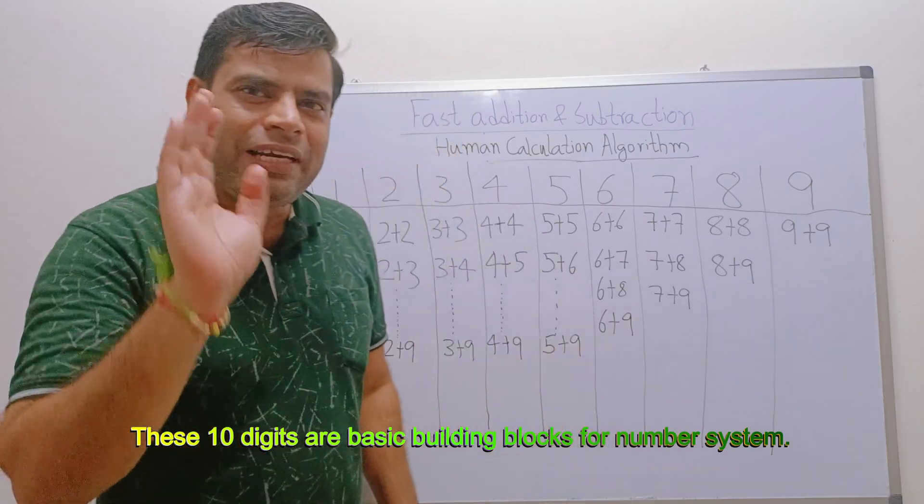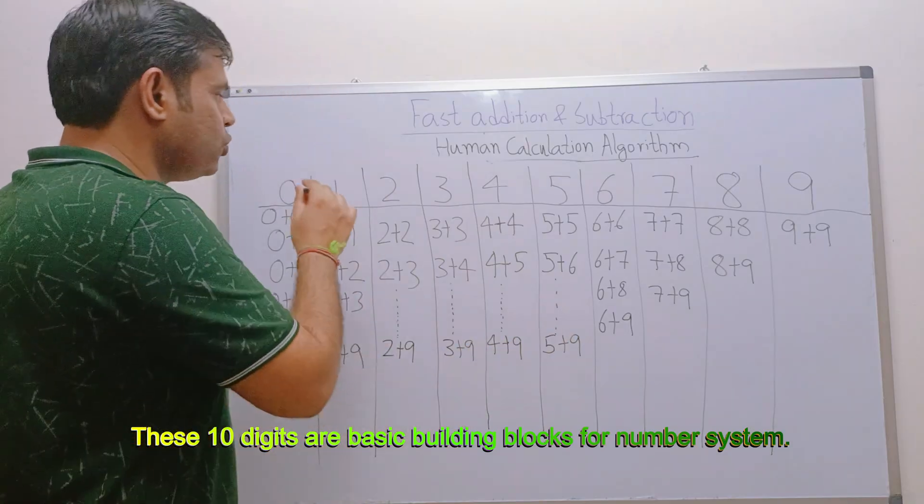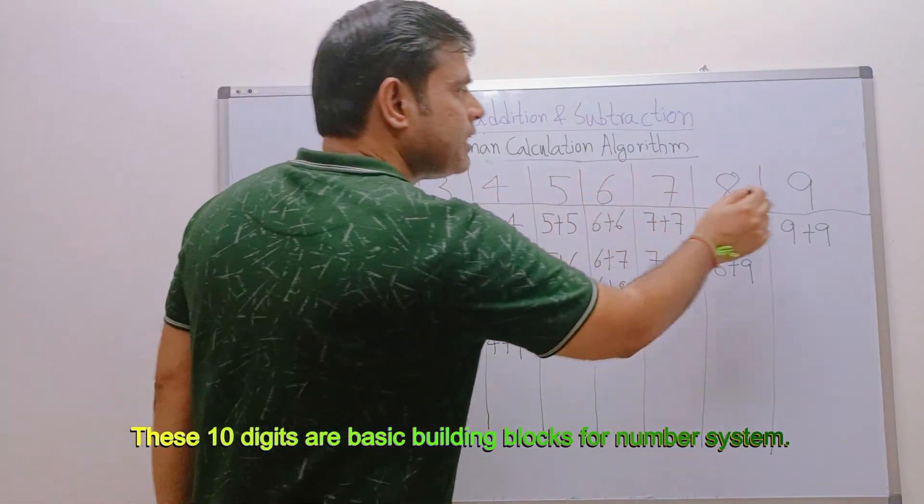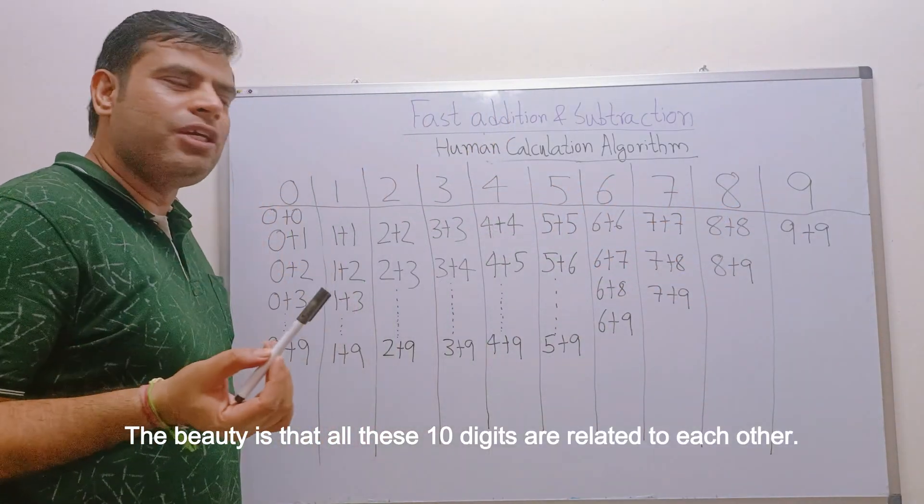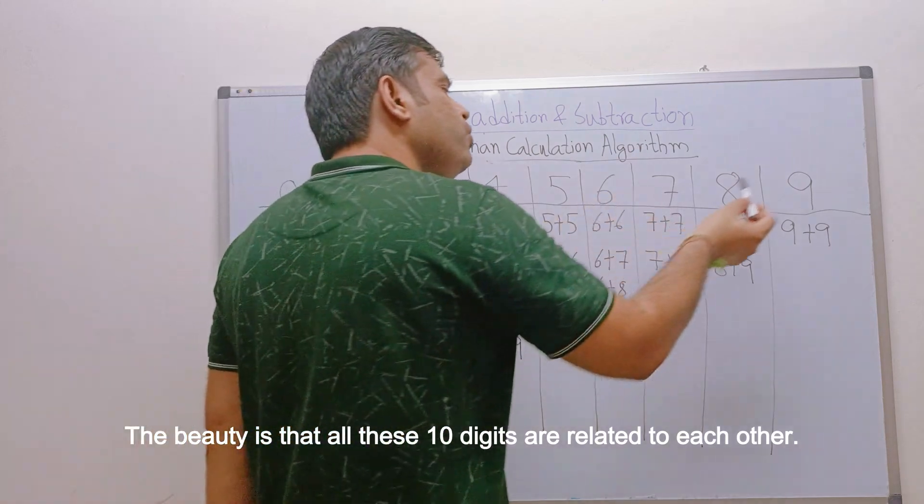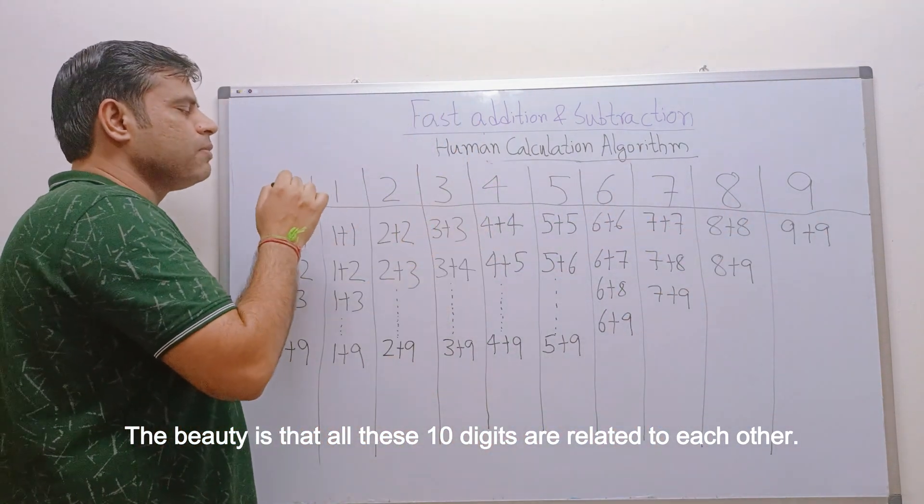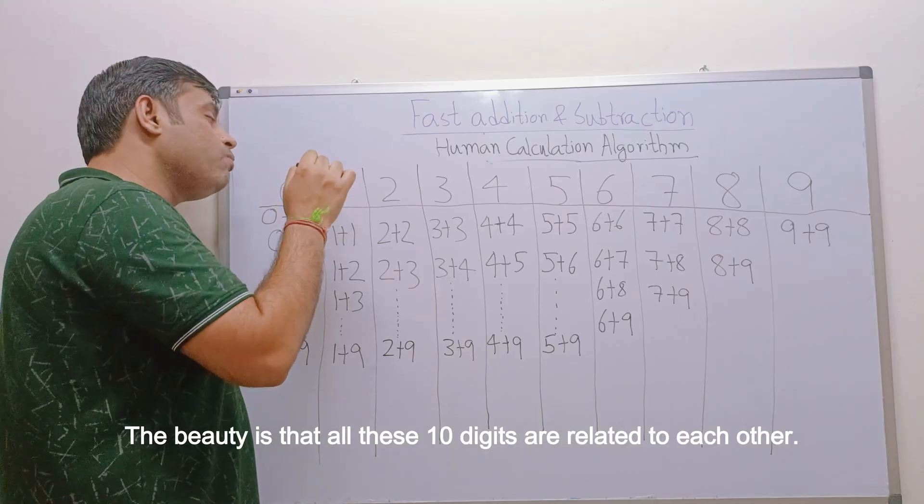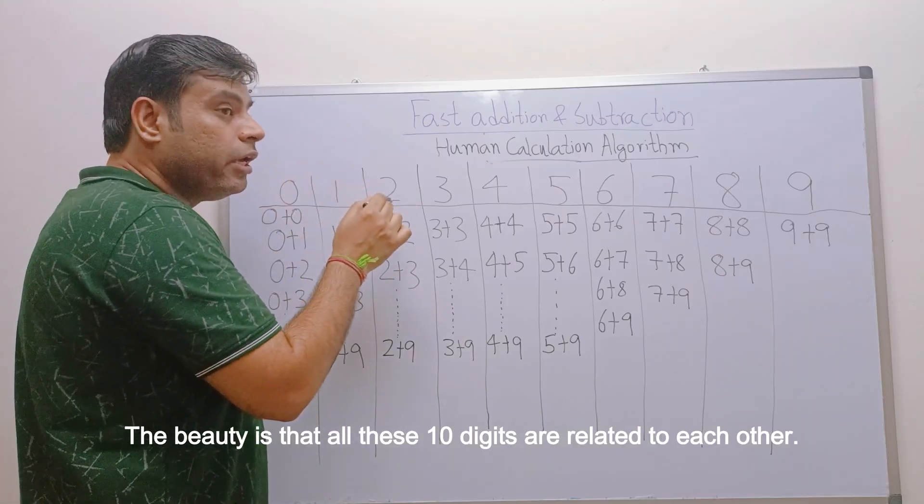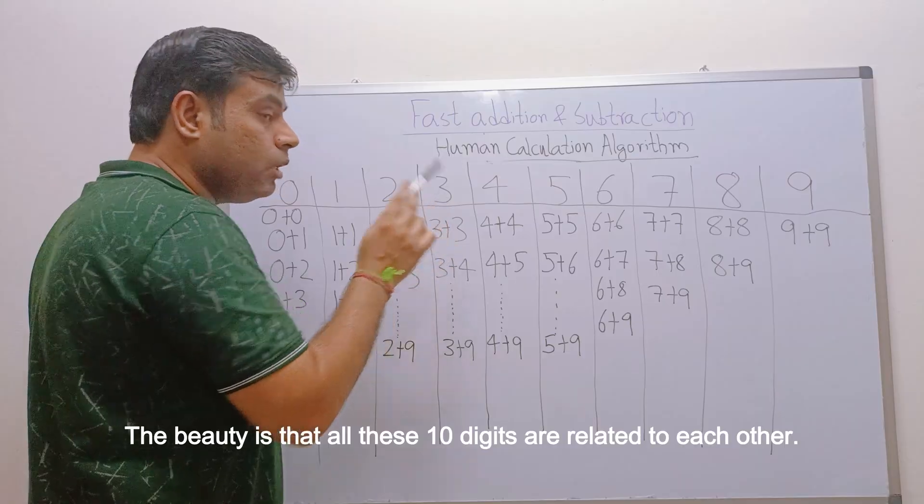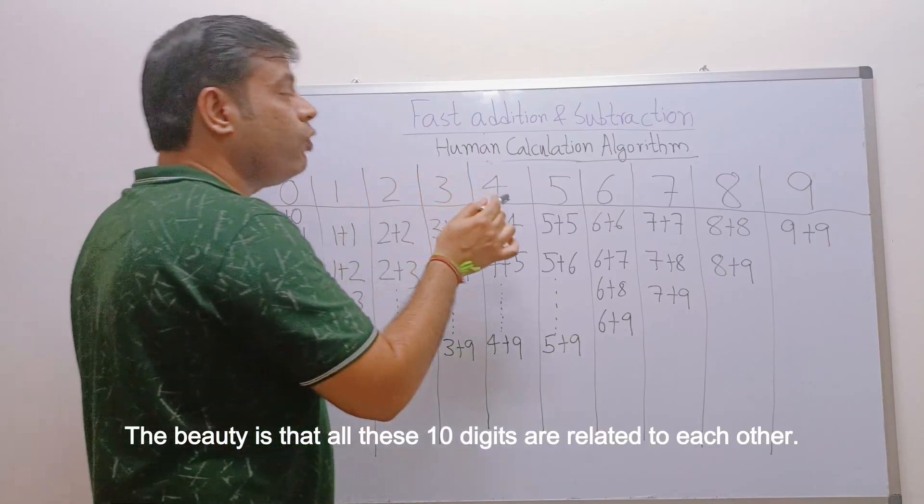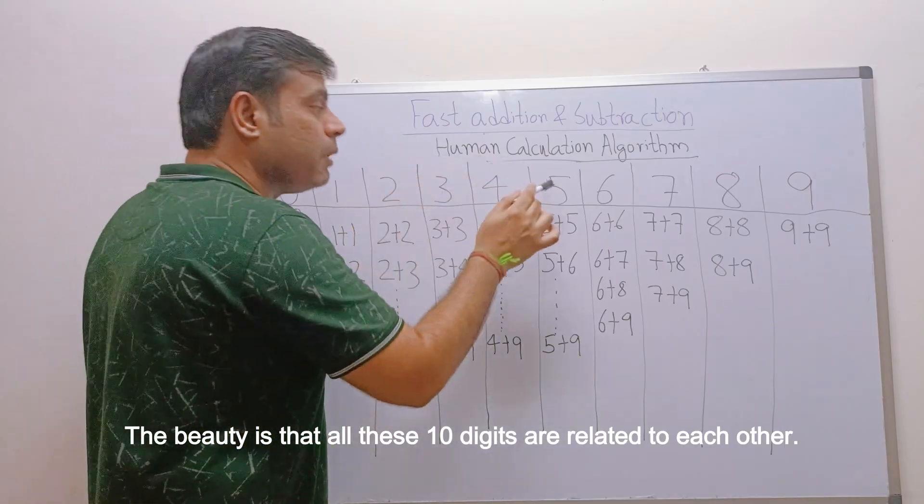So what are the bricks or the blocks of number or number system? The bricks are only 10 types: 0, 1, 2, 3, 4, 5, 6, 7, 8, 9. And the beauty is all these bricks are related to each other, these are consecutive numbers. One comes after zero, and if you add one more brick it becomes two. If you add one more brick it becomes three.